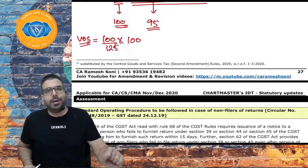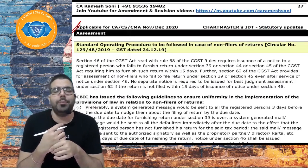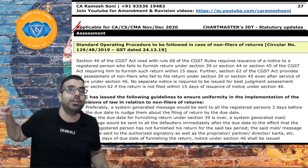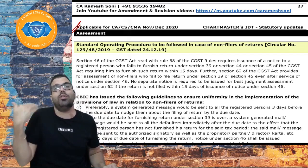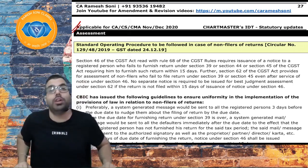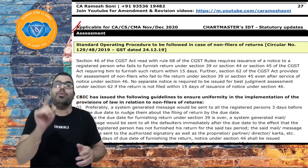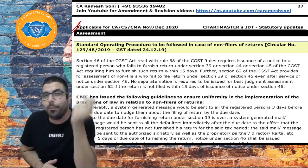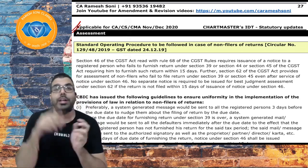The next amendment relates to the chapter of assessment. Section 59 dealt with self-assessment, section 60 with provisional assessment, section 61 with scrutiny of return. Section 62 dealt with best judgment assessment of non-filer of return — if you are a registered person but not filing your return, the officer can do your best judgment assessment.